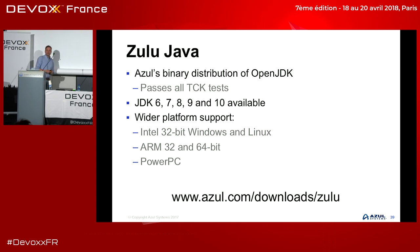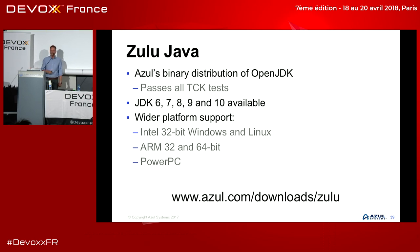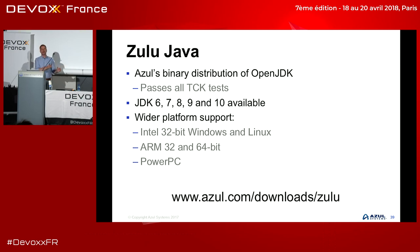Since I work for Azul, we create a version of OpenJDK as a binary distribution you can download for free. We take the OpenJDK source code, build it, run all the build scripts, generate the binaries, and run the TCK tests to ensure it passes all Java SE standard requirements. We have JDK 6, 7, 8, 9, and 10 available, with JDK 11 to follow. We support Windows and Linux on 32-bit, ARM 32 and 64-bit, and even PowerPC. Available under GPLv2 with Classpath Exception license — freely distributable. Commercial support is also available.